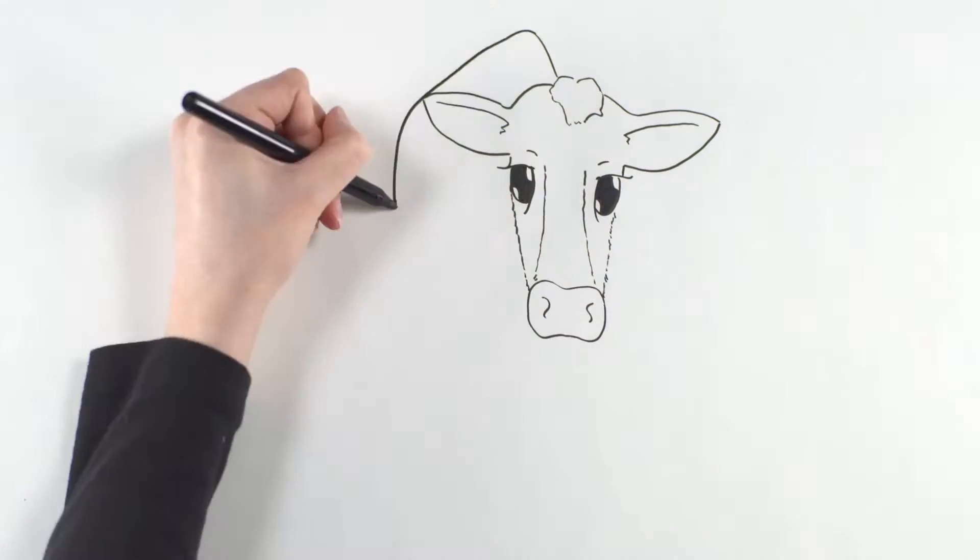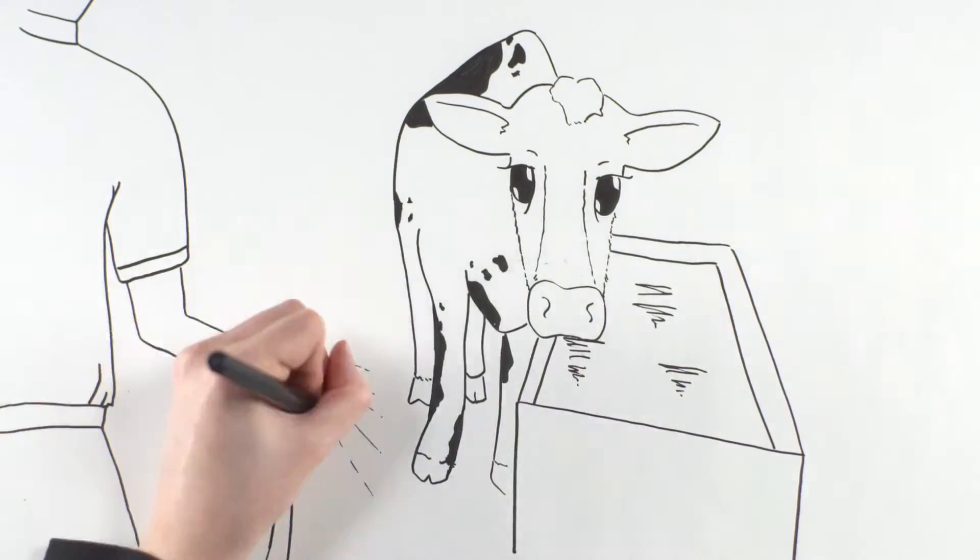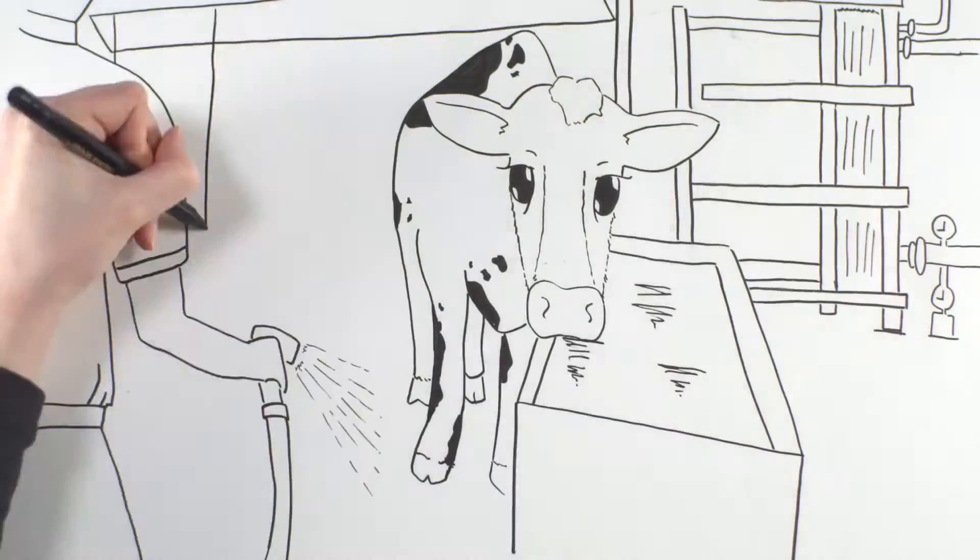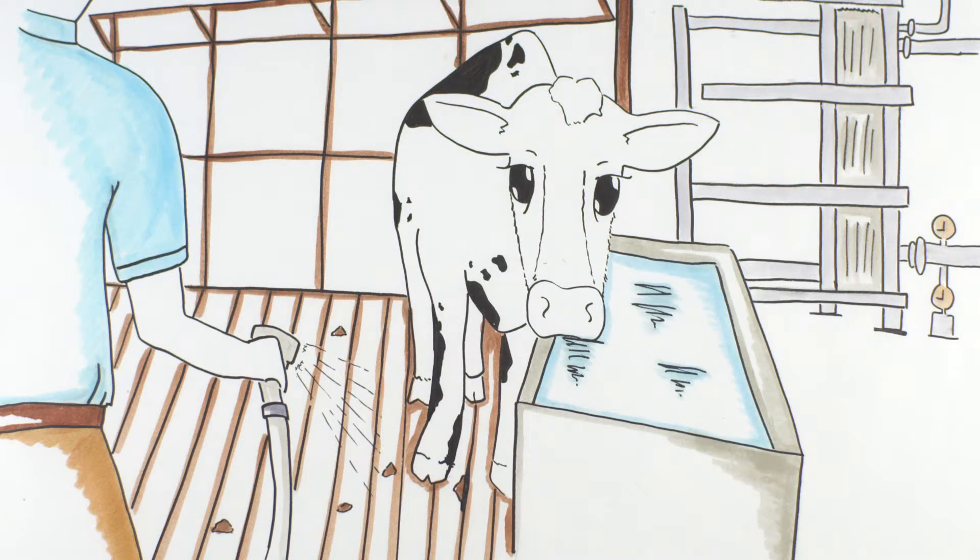Think about it. Water for cows to drink and cool off with. Water to cool the milk. Water to clean and sanitize equipment. Water for crops. Water for milking. Water is pretty important on a dairy farm.